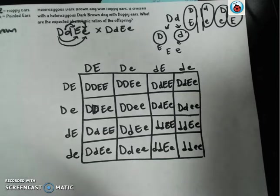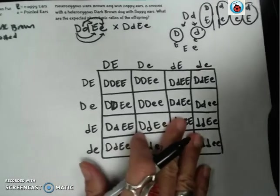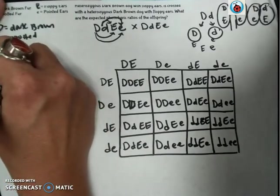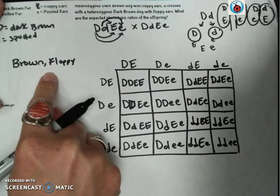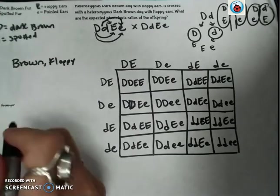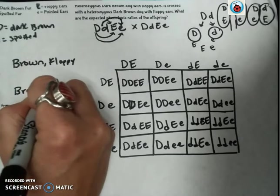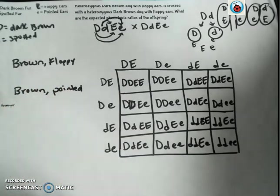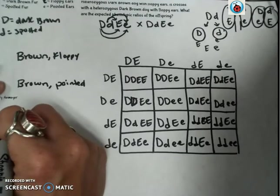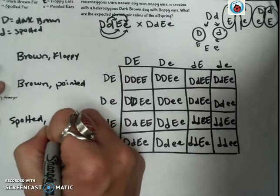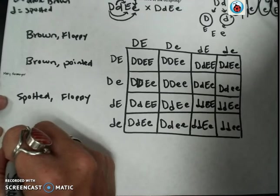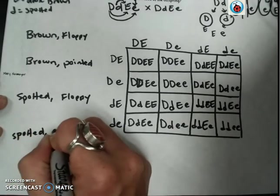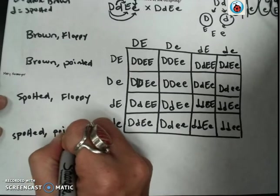So first we're going to look for how many dogs are brown fur with floppy ears? And like, how many of the offspring have the dominant trait for both? And then we'll look for, well how many have the dominant trait for fur color, but the recessive trait for ears? And then we'll look how many have the recessive trait for fur color, but the dominant trait for ears? And then we'll look to see, well how many are recessive for both traits in their phenotype?